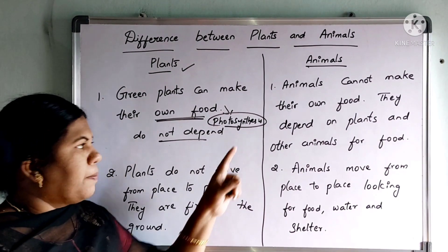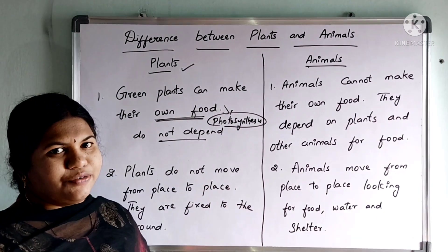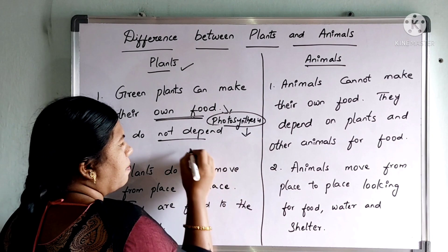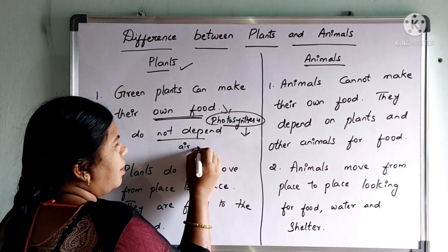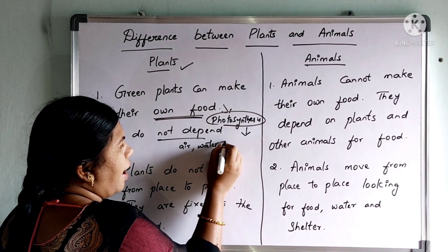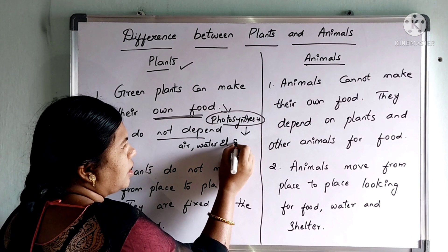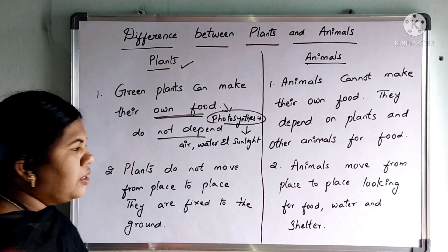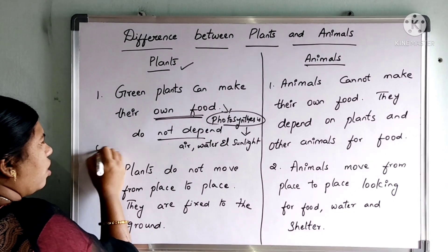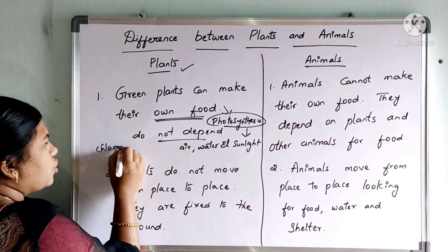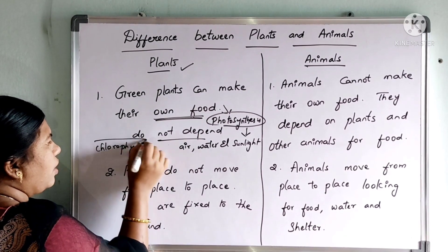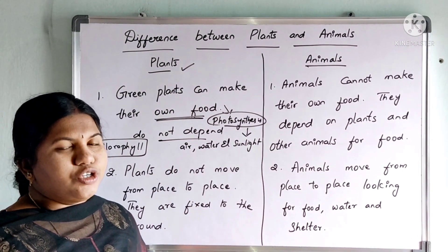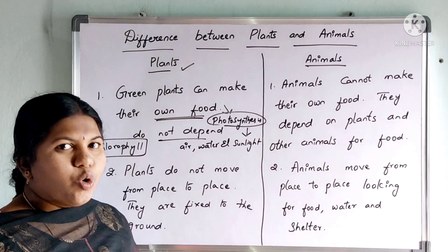By using this method, plants prepare the food. For this photosynthesis process, plants require air, water and sunlight to prepare their food. The food they prepare involves chlorophyll which is stored in the leaves of the plants. In this way, plants are going to prepare their own food.